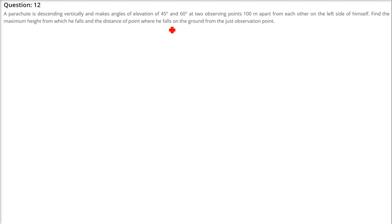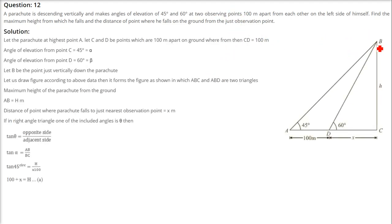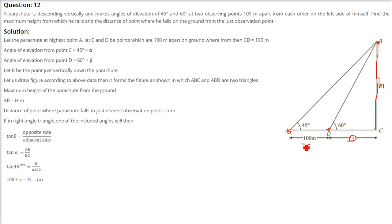A parachute is descending vertically and makes angles of elevation of 45 degrees and 60 degrees at two observing stations 100 meters apart from each other on the left side. Find the maximum height from which he falls and the distance from the point where he falls to the nearer observation station. The parachute is at height H, with two points — one at 60 degrees and one at 45 degrees — 100 meters apart. Let H be the height and X be the distance from the nearest point below the parachute.